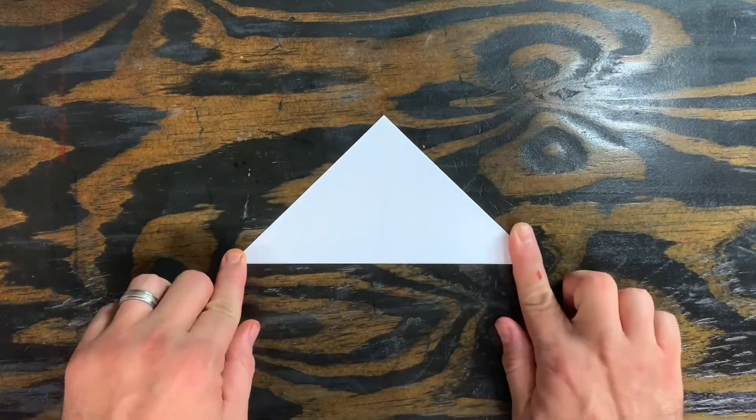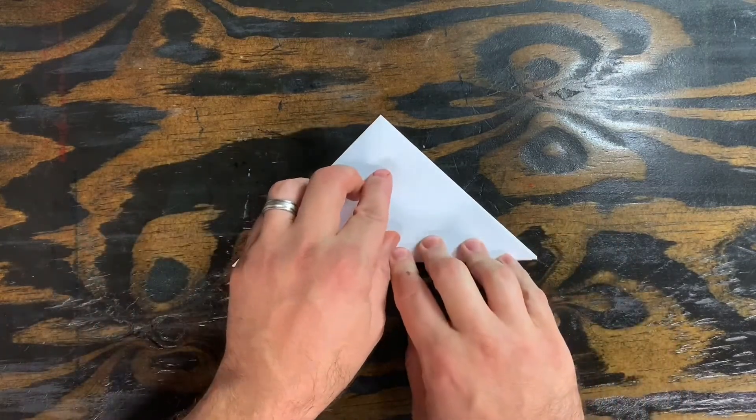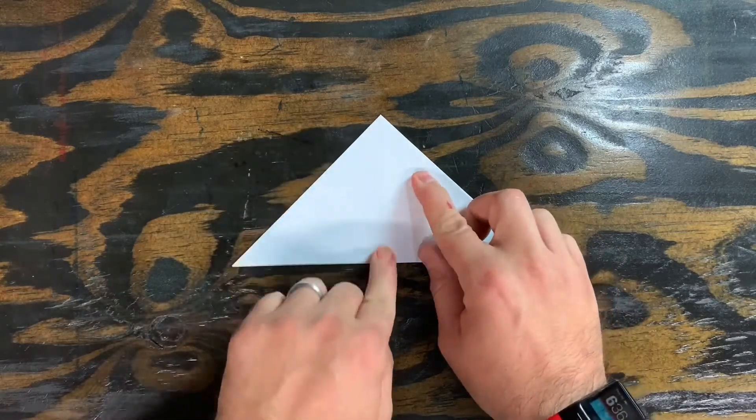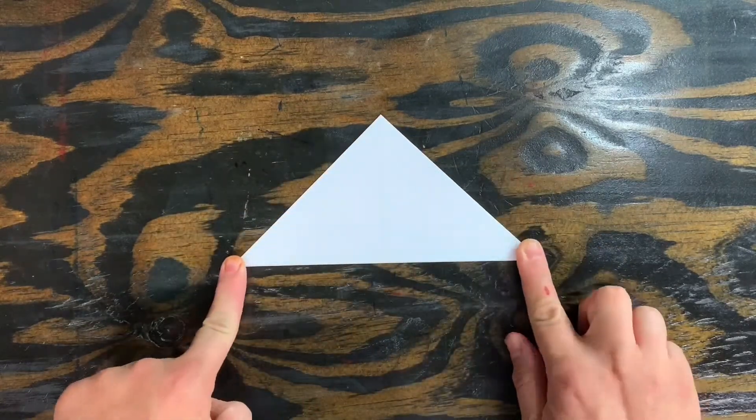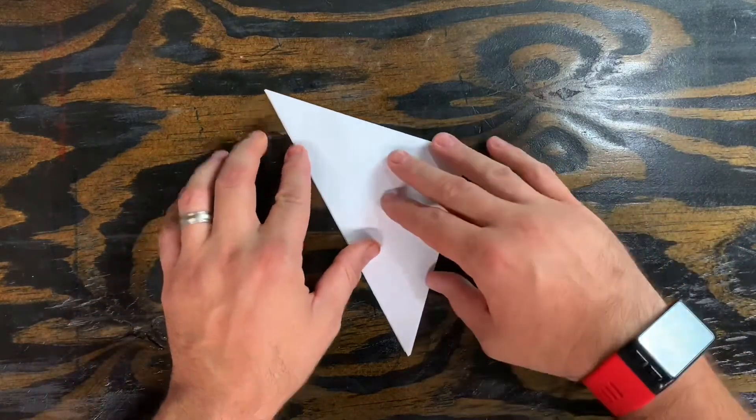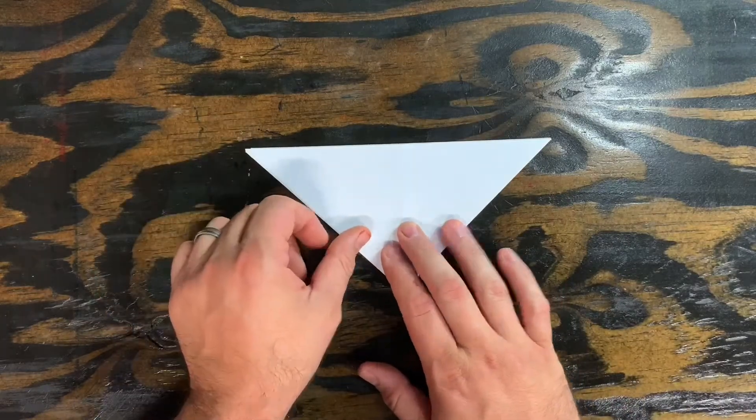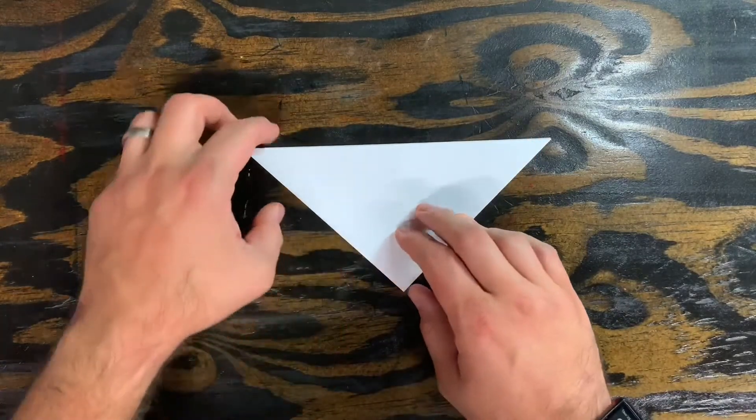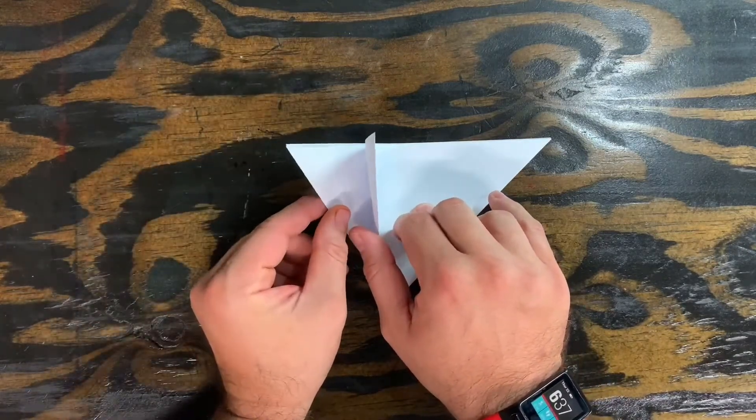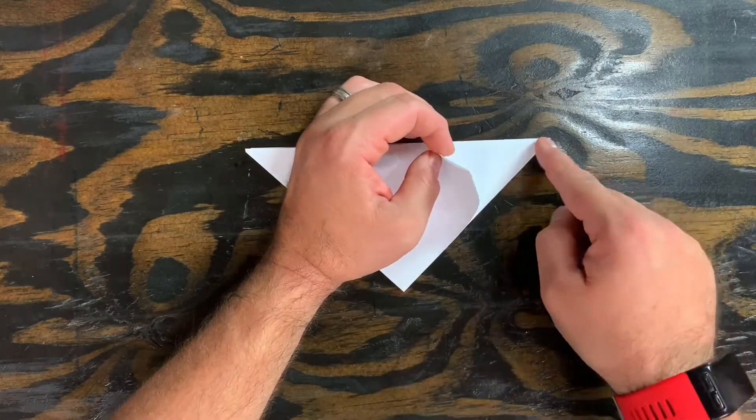If you need to rewind the video and watch that again please do so. It's a kind of a tricky fold but once you learn how to do it it comes up a lot in origami and it's really helpful to know how to do it. Now I'm going to turn the paper around 180 degrees so the long side of the triangle is on top. Each side of this triangle has two flaps, one here and one here, and on this side there's one and there's the other one.